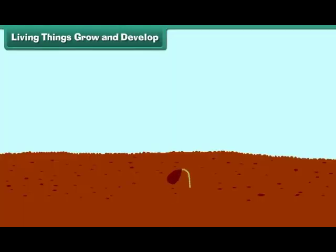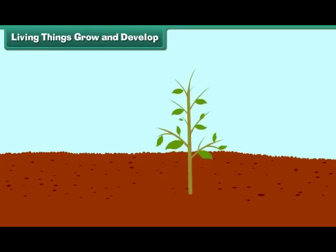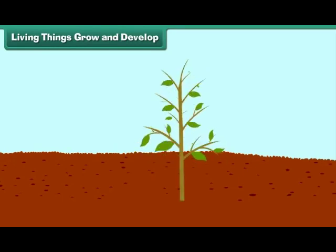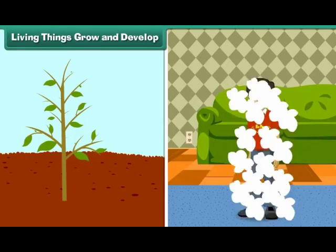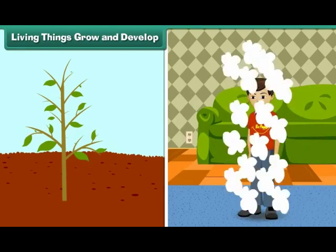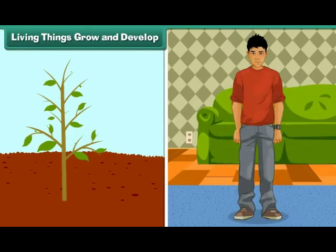Living things grow and develop. All organisms grow and develop. Growth results in an increase in size, weight, and synthesis of new protoplasm. In animals, growth is limited to a certain age, while plants grow throughout their life.